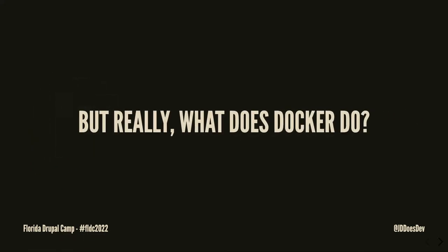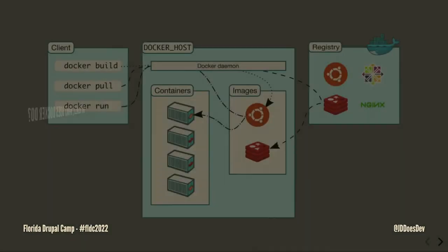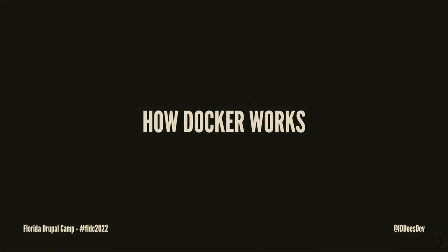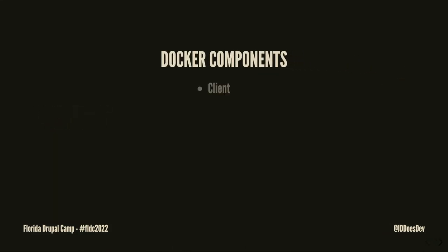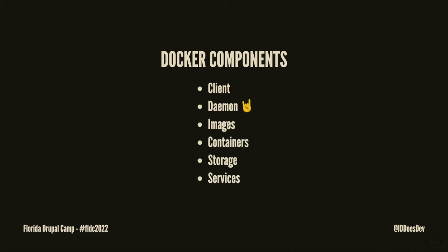So really, what does Docker do and how does it work? It's built on multiple components. We've got the client, the daemon, images, containers, storage, services, and registries. These all go into making Docker work and communicate with the containers.